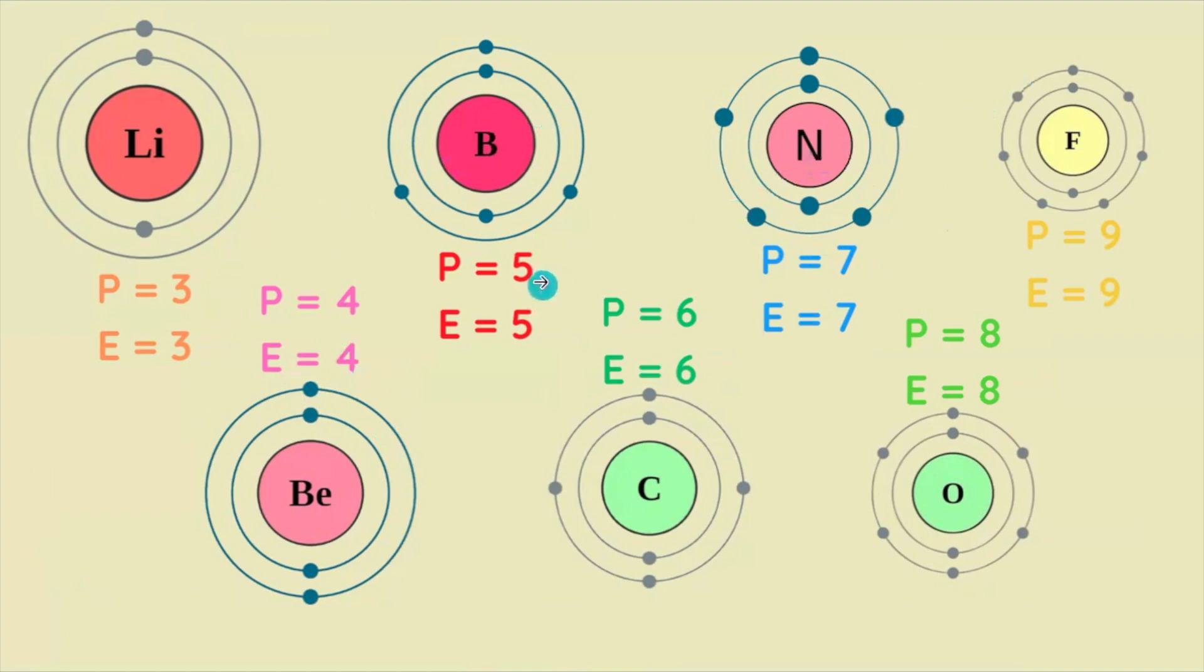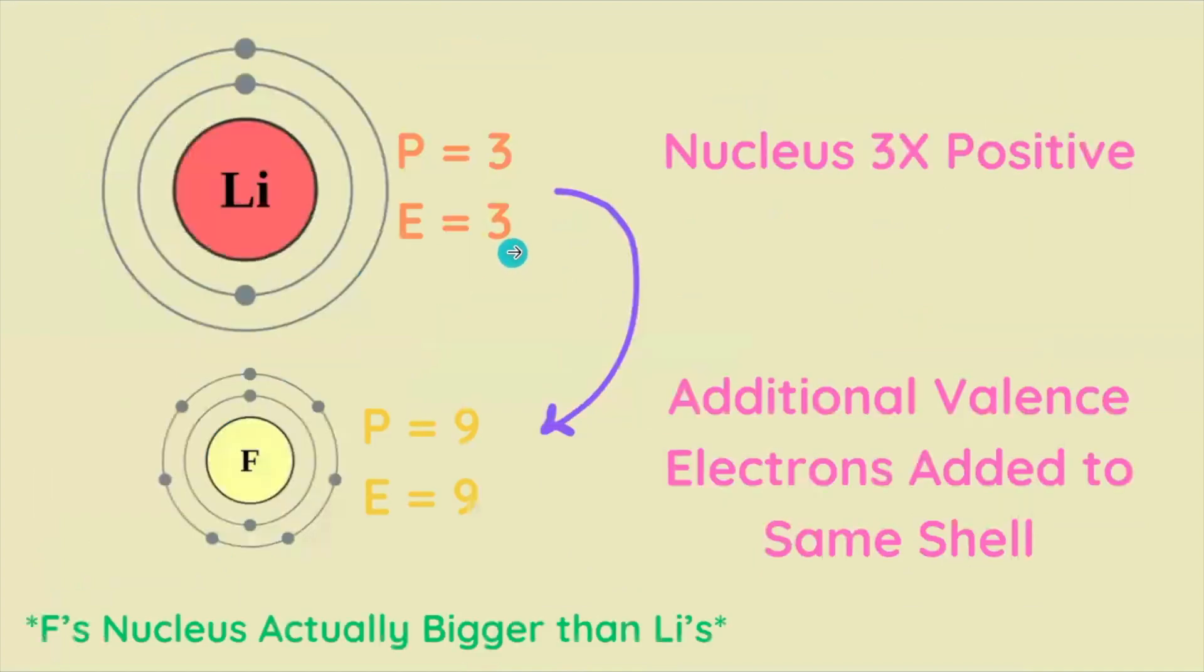However, each additional electron is added to the same second shell, the valence shell. Couple that with the fact that the nucleus gains positive protons moving left to right, and going from lithium to fluorine, the nucleus has tripled in positivity, all the while the additional valence electrons are still two shells away from the nucleus.